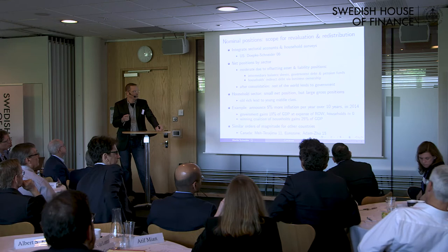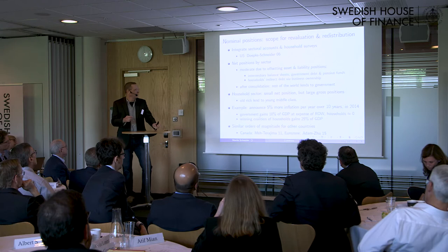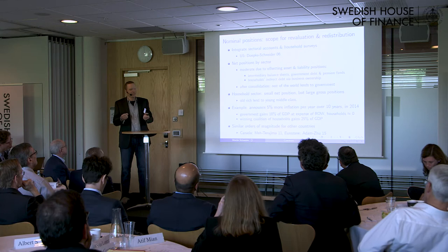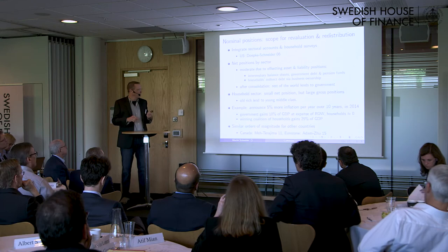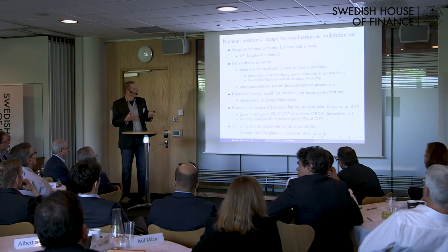Consider a thought experiment: suppose we had announced 5% more inflation per year over 10 years in 2014. At the sectoral level, that would lead to a gain of 10% of GDP by the government at the expense of the rest of the world, with households approximately even. But at the same time, there would be a winning coalition of households gaining 25% of GDP at the expense of lender households. Similar orders of magnitude have been found for other countries where this integration of accounts has been done.